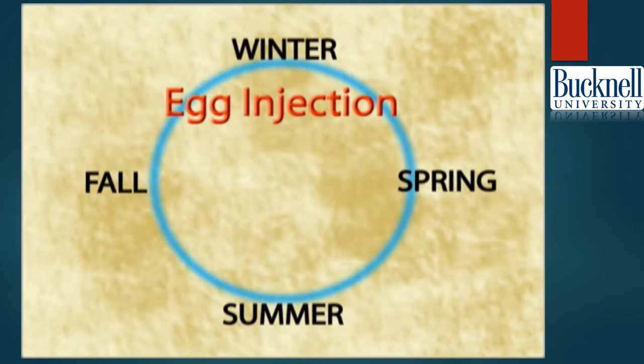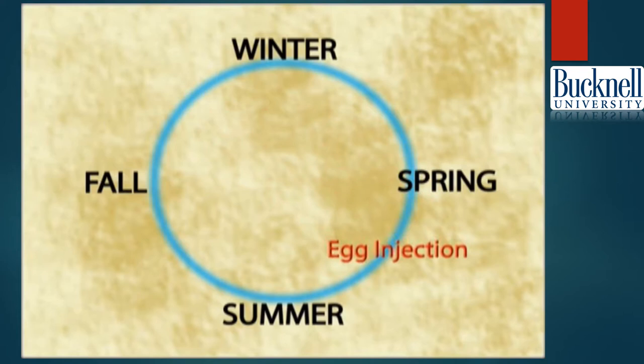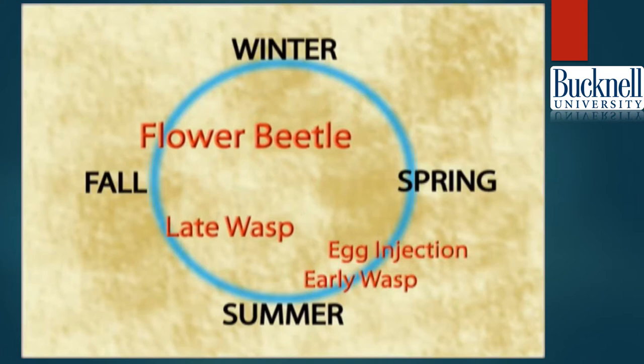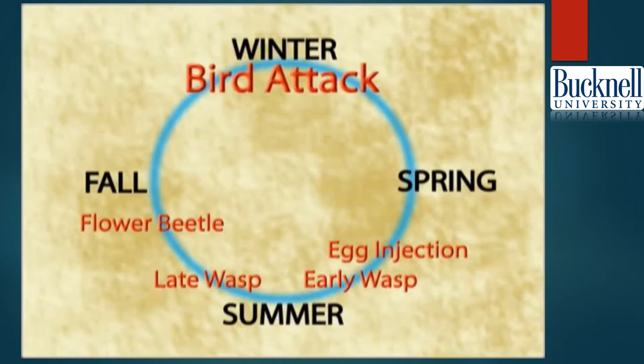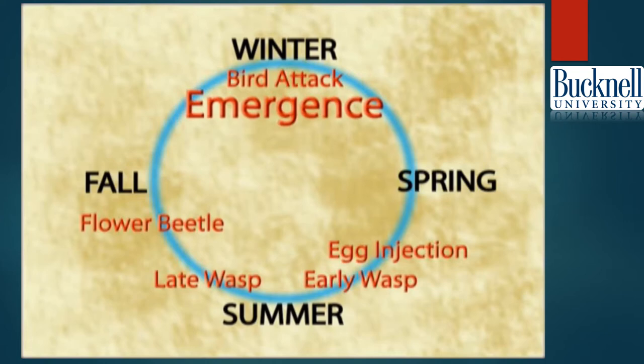Thus the life cycle of the gall fly is made up of a series of events. First, the female fly injects eggs in buds in the late spring. Shortly thereafter, the early wasp attacks. As the larva and gall grow, the late wasp and the beetle attack. In the winter, the larva is still in the gall and is vulnerable to bird attack. In the spring, the adult fly finally emerges to complete the cycle.